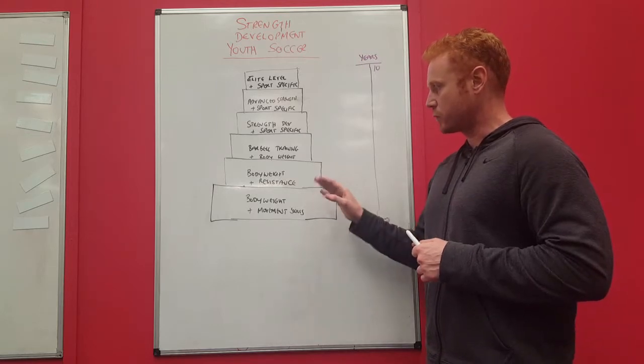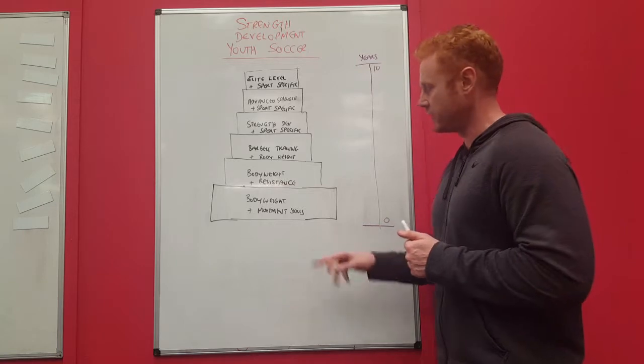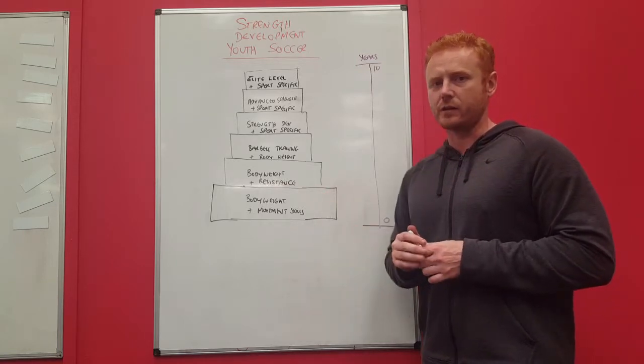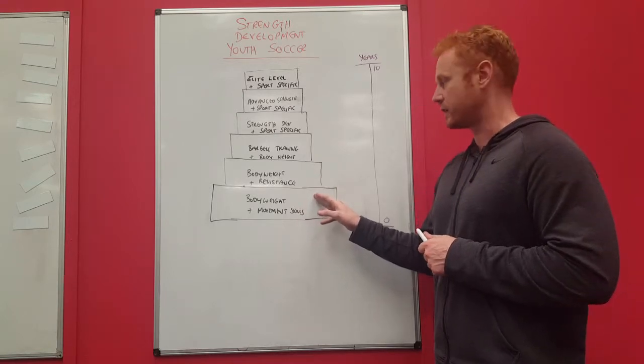The base of the pyramid is body weight training and movement skills. With kids this is really important. This is the first stage. We make sure that this is okay, whether a kid is 12 or 16. We identify if there are any issues here.